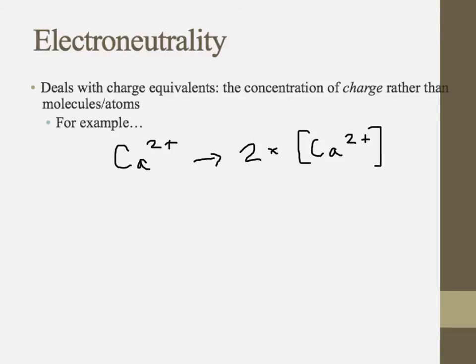So each calcium ion has essentially two charges associated with it. So you multiply the concentration of that ion by two to get the concentration of charge. So if you had potassium, then there's only one charge associated with it, so you just care about the concentration of potassium. You're just multiplying it by one. So that's what we mean when we're talking about the concentration of charge rather than the concentration of just the ion itself.